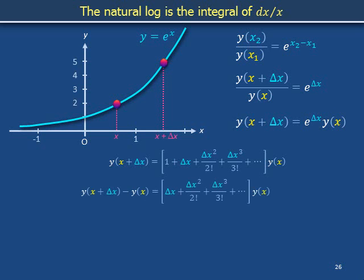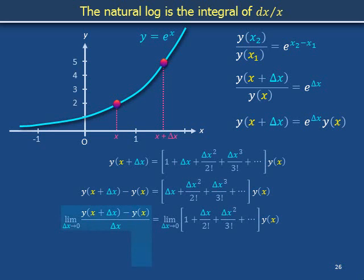Subtract y on x from both sides. This means removing the constant term 1 from the series. And now divide both sides by delta x and take the limit as delta x goes to 0. This limiting process in turquoise equals this limiting process in gold. The turquoise expression is dy dx and the gold expression is y.